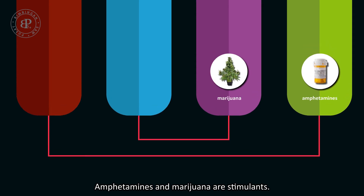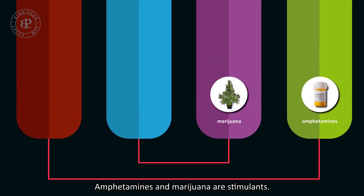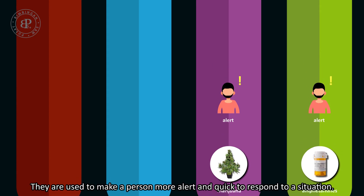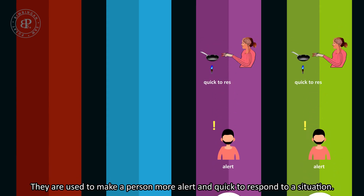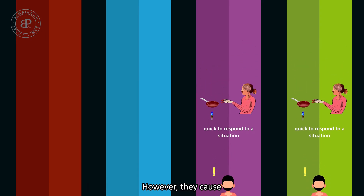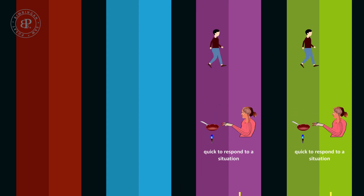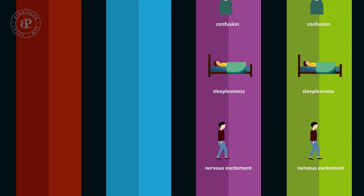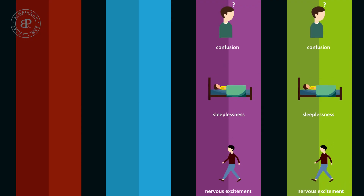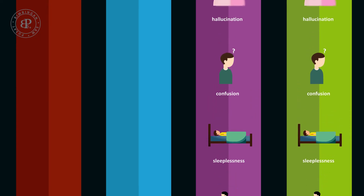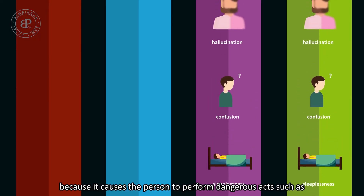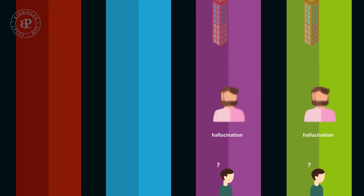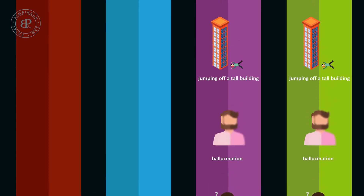Amphetamines and marijuana are stimulants. They are used to make a person more alert and quick to respond to a situation. However, they cause nervous excitement, sleeplessness, confusion, and hallucination, and often lead to death because they cause the person to perform dangerous acts, such as jumping off a tall building.